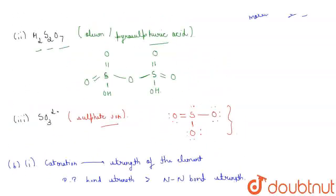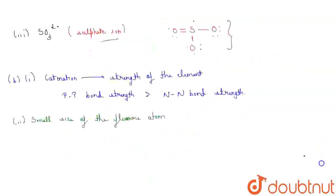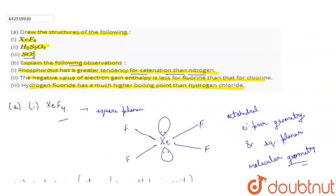Now, moving to the last observation. That is, hydrogen fluoride has a much higher boiling point than hydrogen chloride. So hydrogen fluoride has much higher boiling point than hydrogen chloride due to the strong hydrogen bonding in fluorine. So hydrogen fluoride has much higher boiling point that is 293 Kelvin than that of hydrogen chloride. So this is the solution. Thank you.